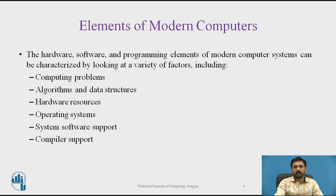The hardware, software, and programming elements of modern computer systems can be characterized by looking at a variety of factors, which includes computing problems, algorithm and data structure, hardware resources, operating system, system software support, and compiler support.